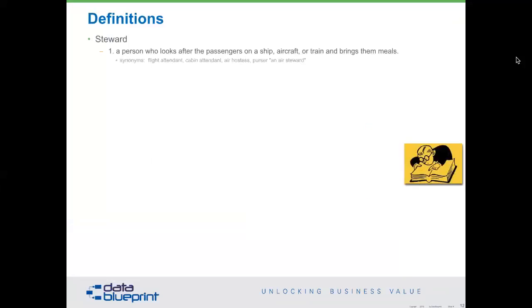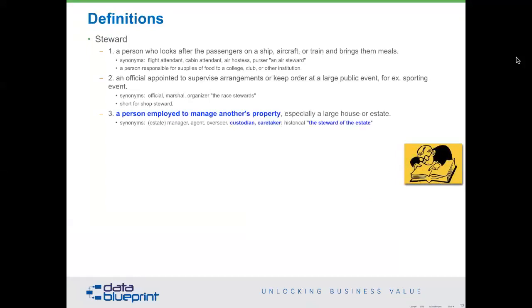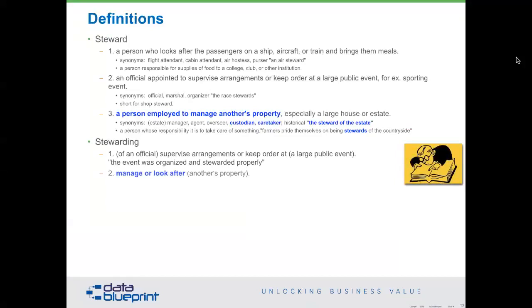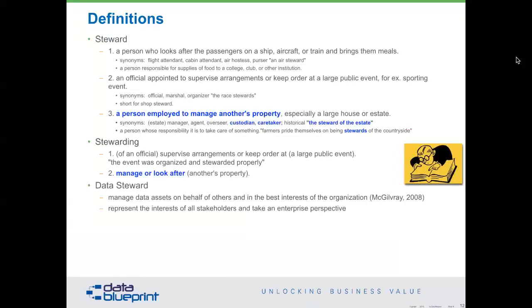Let's go to the basics and start with definitions of steward. A steward is a person who looks after passengers and brings some meals. It's somebody employed to manage something for somebody else — steward of an estate, for example. And a data steward is managing data sets on behalf of others. The key is to represent a balance between stakeholders as well as the enterprise perspective, and frankly, have dedicated time. I get into a lot of arguments with organizations who say they'd like everybody to do 10%.